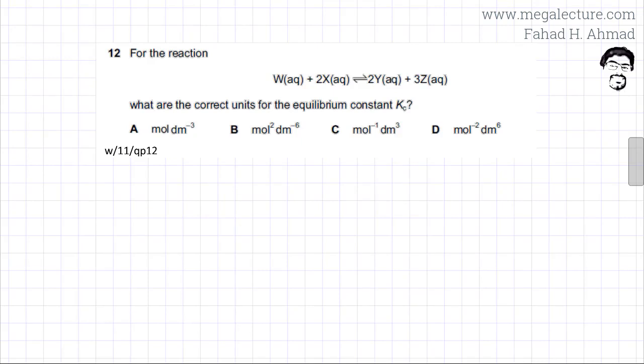The following past paper question is about finding the units for Kc. For the reaction, you're given W(aq) + 2X(aq) producing Y(aq) + 3Z(aq), and you are asked what are the correct units for the equilibrium constant Kc.